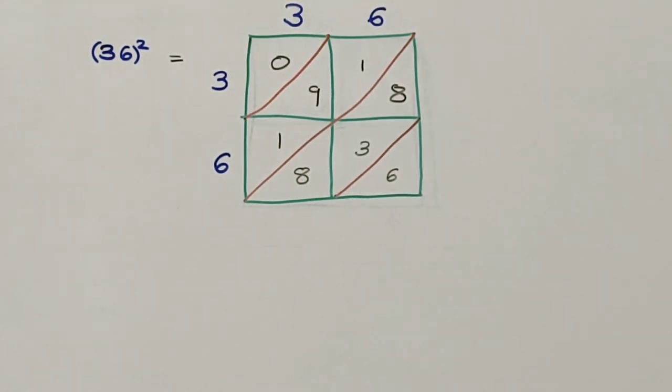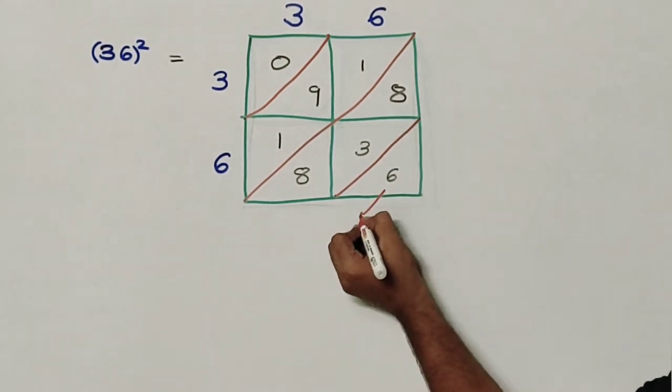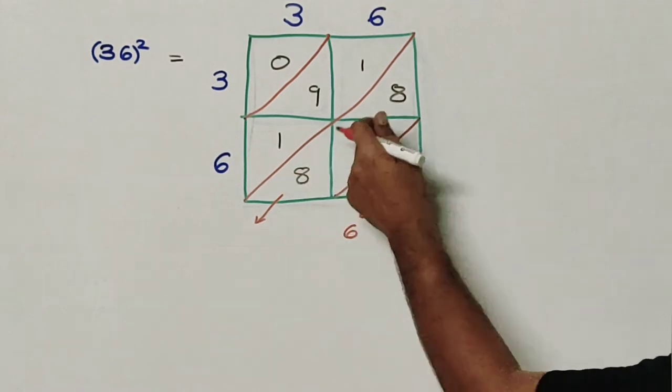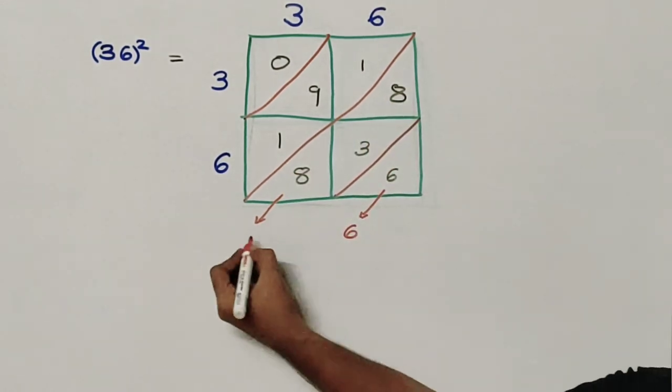So let us find the answer now. This will be 6. This will be 8 plus 3 plus 8 which makes it 19.